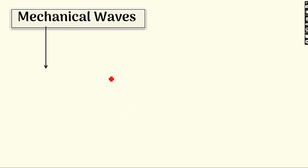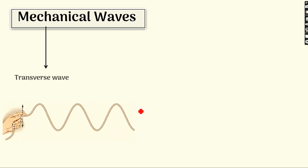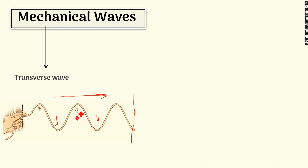For an example of a transverse wave, consider a rope tied and fixed at one end with the other end in my hand. If I give it a jerk or a bump, there is a vibration created in the rope. This particle of the rope goes up, this one goes down, this goes up, this goes down — and a wave travels in this direction. If I look at this particle, it is at one position and as the wave goes forward, the particle comes to the mean position then goes back down. So the vibration of the particle is perpendicular to the direction of propagation — this is a transverse wave.